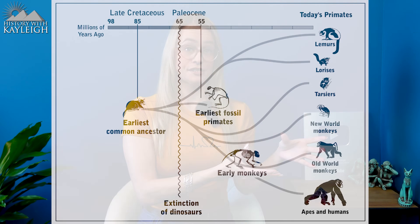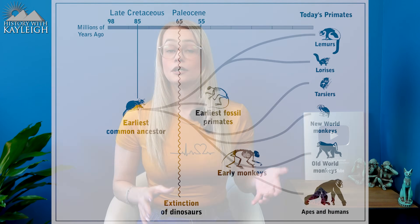They colonized South America in the sense that they inhabited it, not in the sense of colonization as we have seen in the past few hundred years. The simians in South America are known better as the New World monkeys, while the remaining simians in Africa and Eurasia became known as the Catarrhini clade — better known to most as the Old World monkeys. Between 30 and 20 million years ago, during the Miocene — an extremely important time for evolution — the parvorder Catarrhini split into two distinct evolutionary groups.